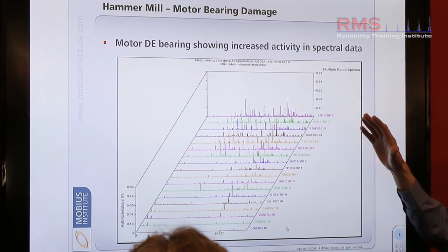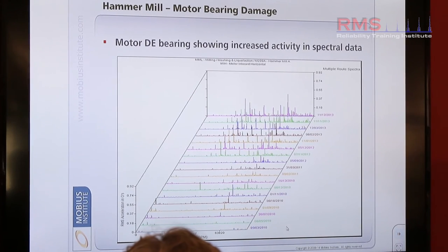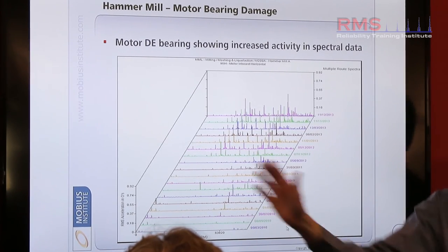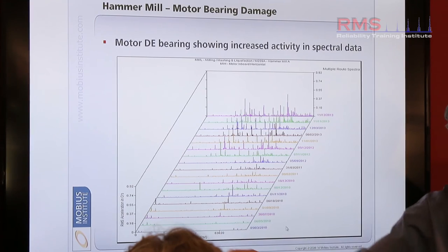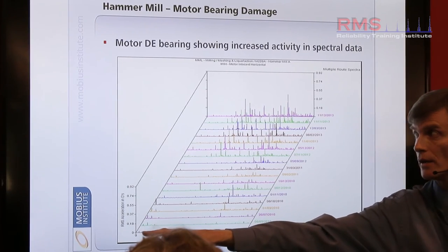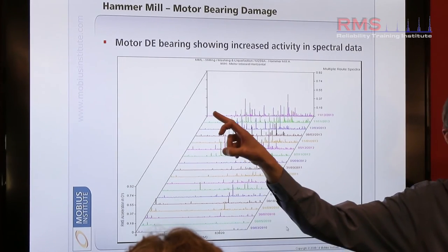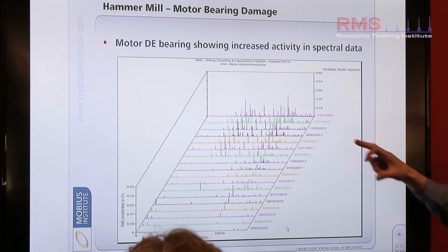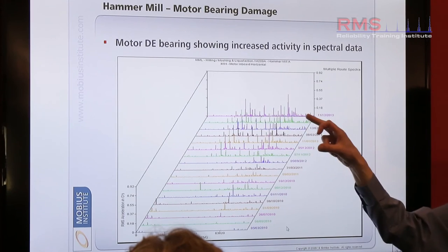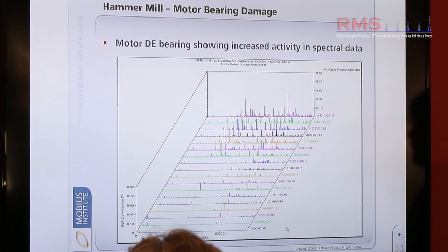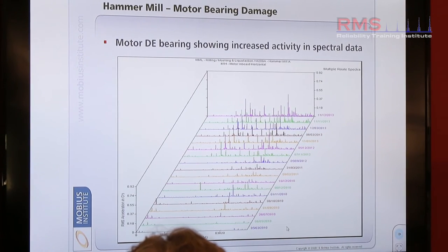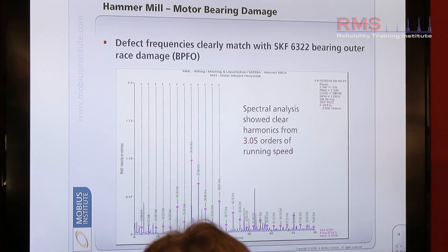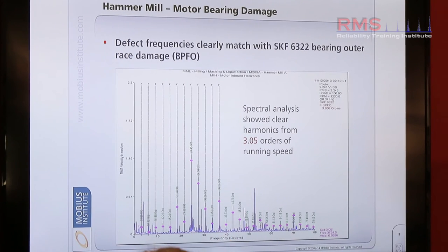The heartbeat has changed. If this was a problem with balance, for example, my 1x peak is this very small peak down here — not of concern. But these stronger peaks here are the main cause of why that trend caused that degradation.